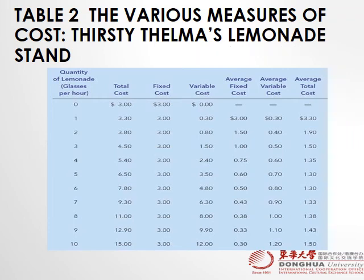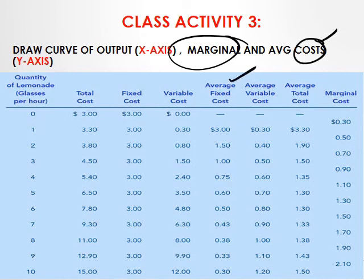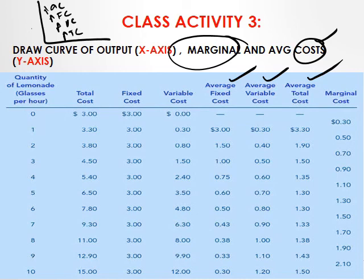We have Class Activity 3. Draw output on the x-axis, and on the y-axis draw marginal cost and all the average costs: average fixed cost, average variable cost, and average total cost — all on one graph. The y-axis represents all the costs and the x-axis is output. We'll match our answer in the next slide.